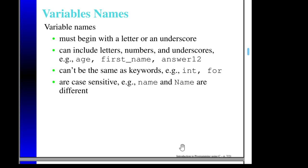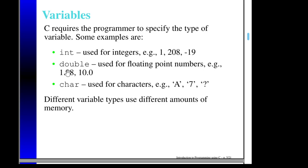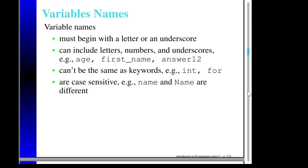Variable names can't be the same as keywords — that is, words that have specific meaning in the language. I've already shown you that int, double, and char are all keywords because they have particular meaning when we're declaring variables. So it would be illegal to create a variable of type double named 'int', because it would confuse the compiler.